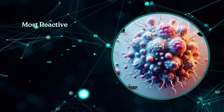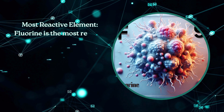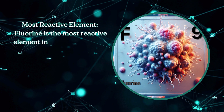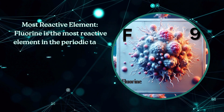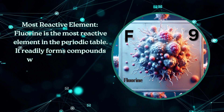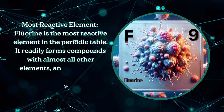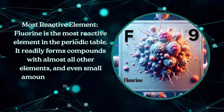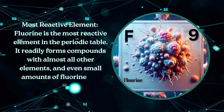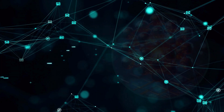Fluorine is the most reactive element in the periodic table. It readily forms compounds with almost all other elements, and even small amounts of fluorine can react violently.